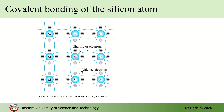Silicon has four electrons in its outermost shell. These four electrons are shared with the four neighboring silicon atoms through covalent bonds — each atom shares one electron with each neighbor. In this way, every atom's octet is filled.